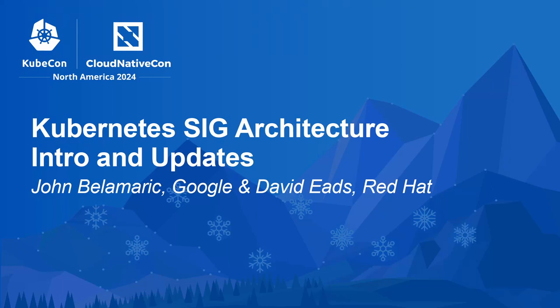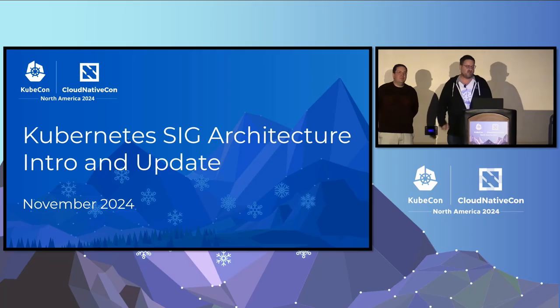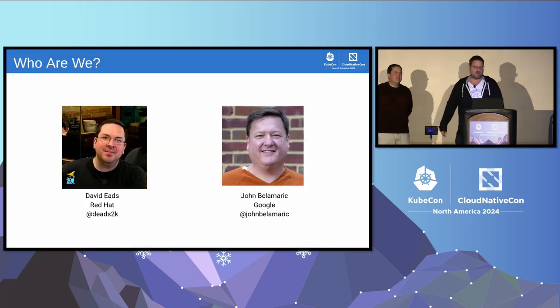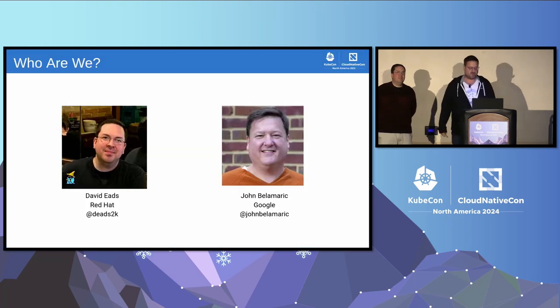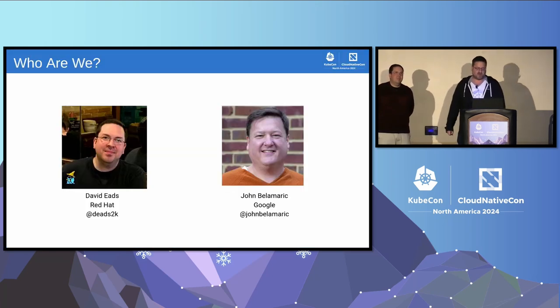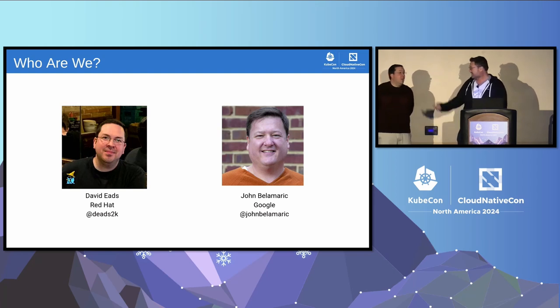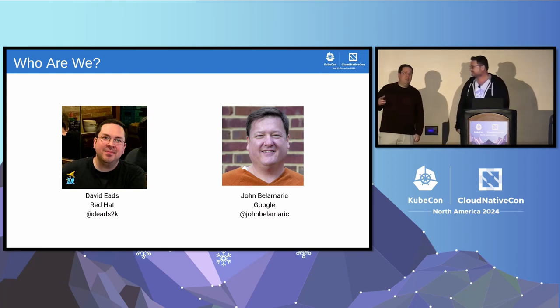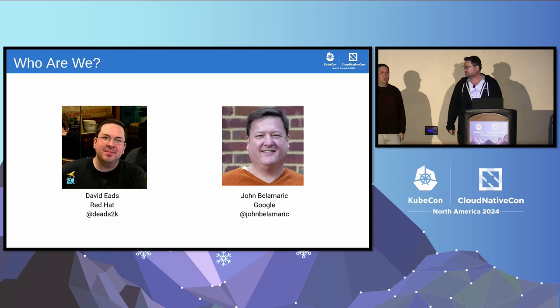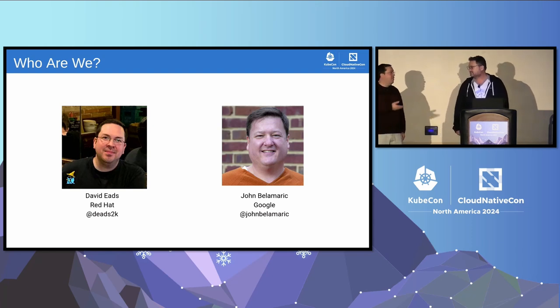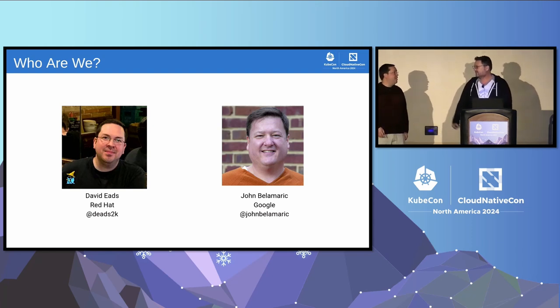Hello everybody, welcome. This is the Kubernetes SIG Architecture intro and update. My name is John Belameric. I'm at Google and I'm one of the co-chairs of the SIG. I'm David Eads. I am a chair and tech lead for API Machinery and tech lead for auth, and heavily involved in a lot of SIG Arch projects.